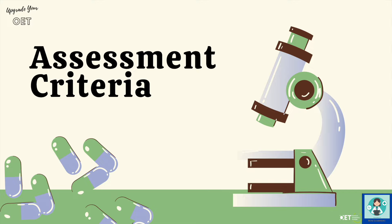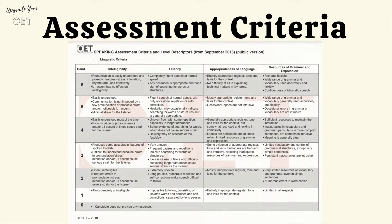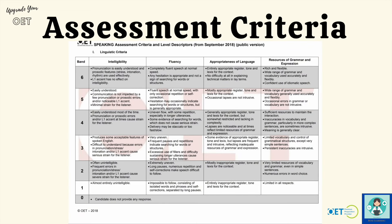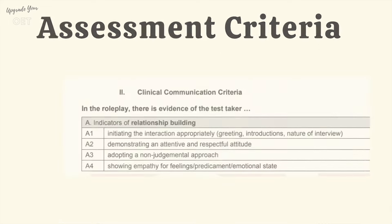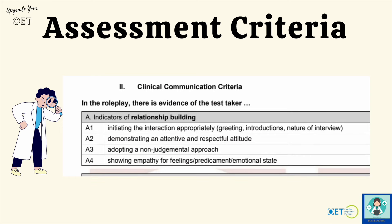Let's get started with the assessment criteria. We're not going to go through everything — have a look at one of my other videos if you're not already familiar with that — and we're going to focus in particular on the clinical assessment and the relationship building, which you can see highlighted here. There are four indicators that the examiners are looking for. If you know what they're looking for, it's easier to give it to them and avoid saying things that take away from the evidence you're building. We'll go through each one individually.